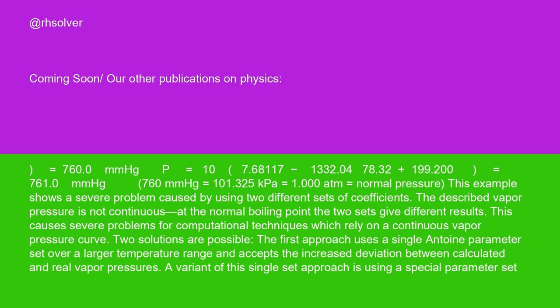This causes severe problems for computational techniques which rely on a continuous vapor pressure curve. Two solutions are possible. The first approach uses a single Antoine parameter set over a larger temperature range and accepts the increased deviation between calculated and real vapor pressures.